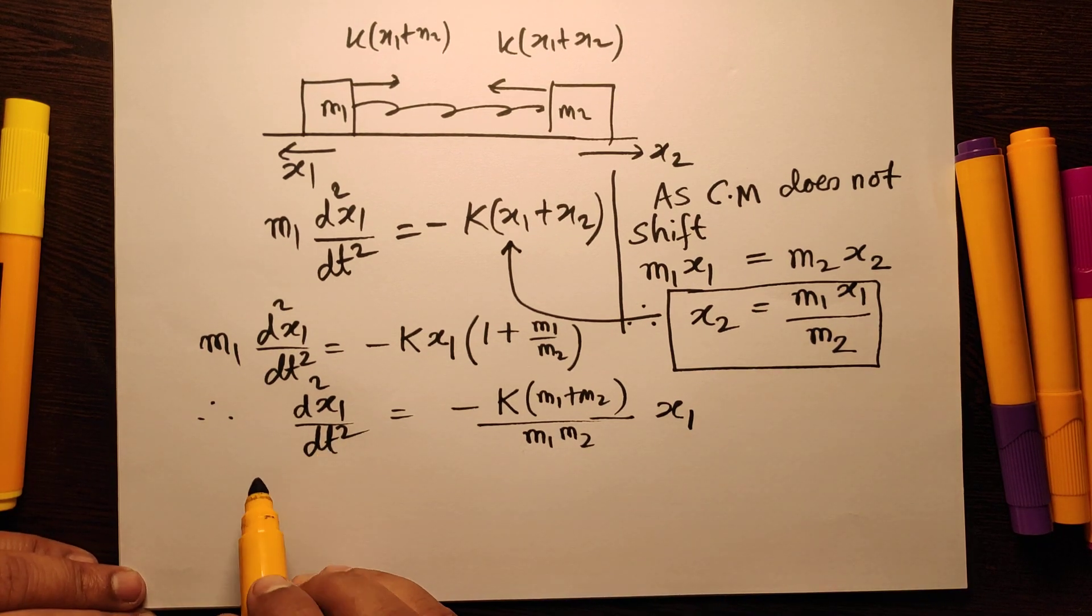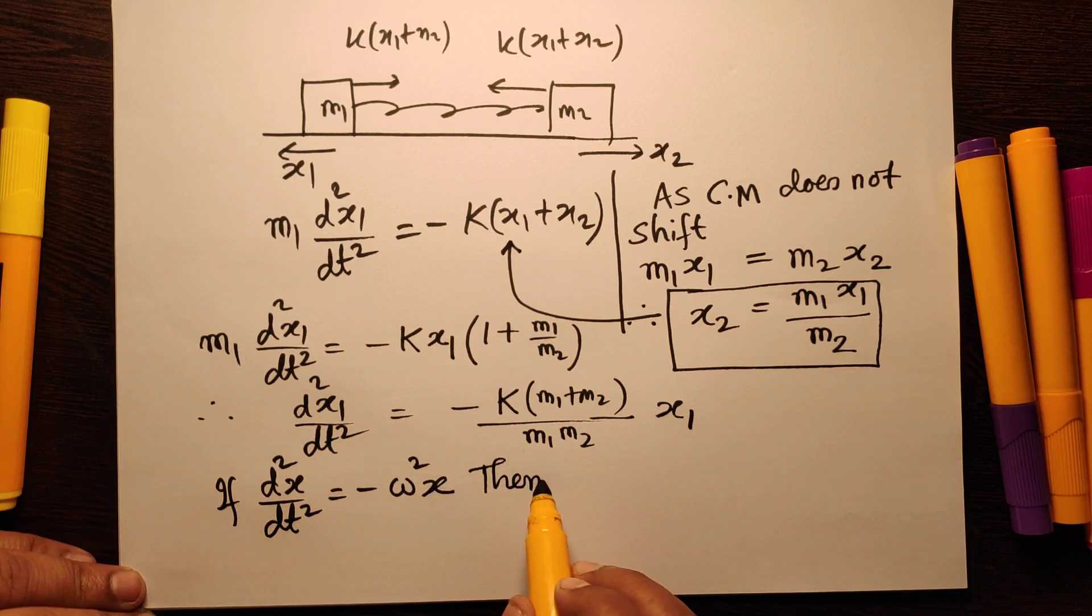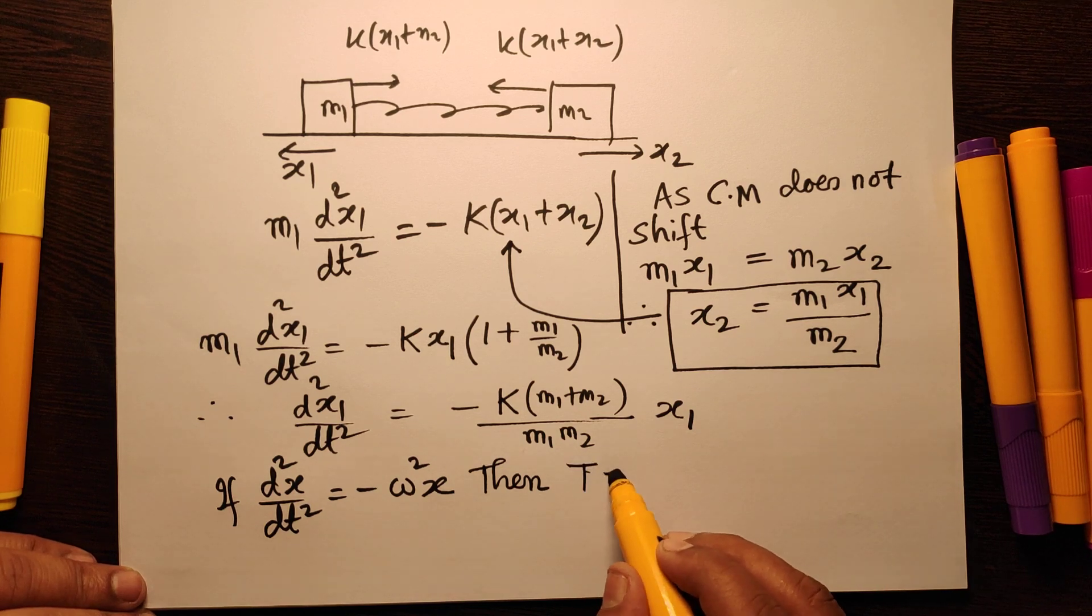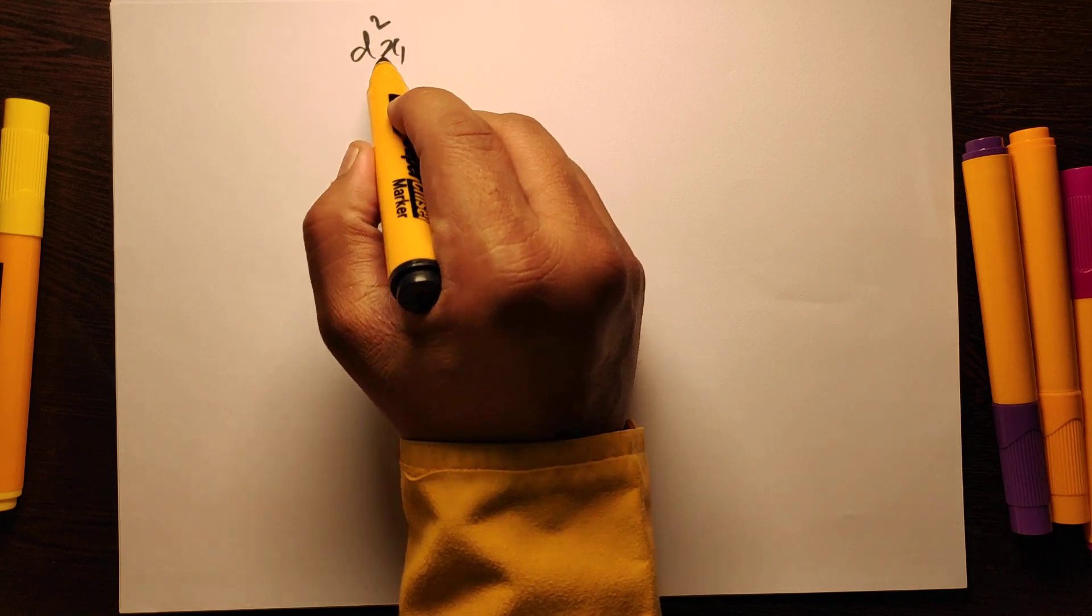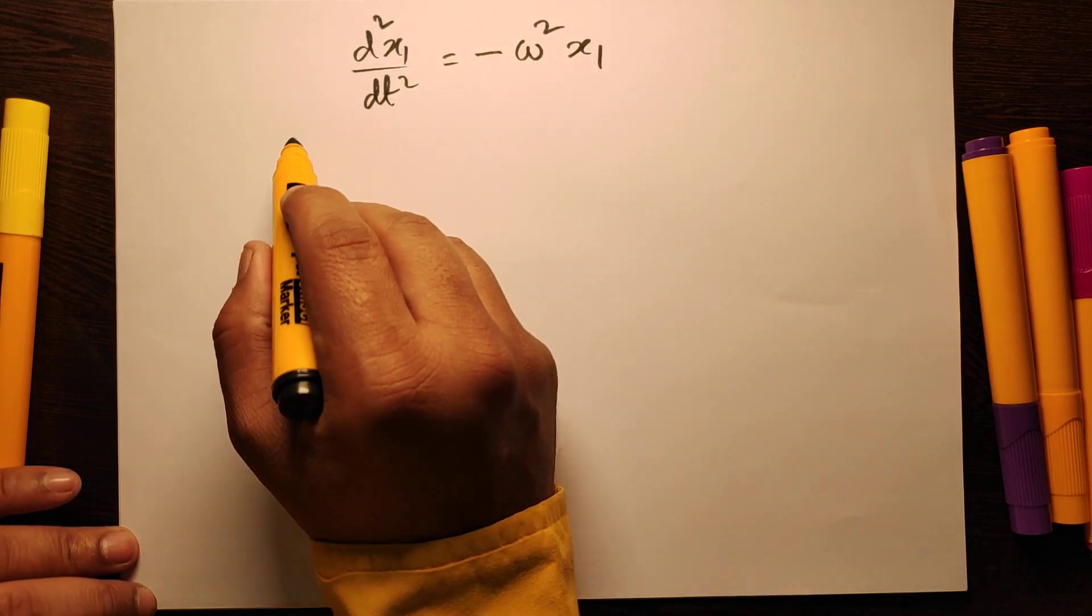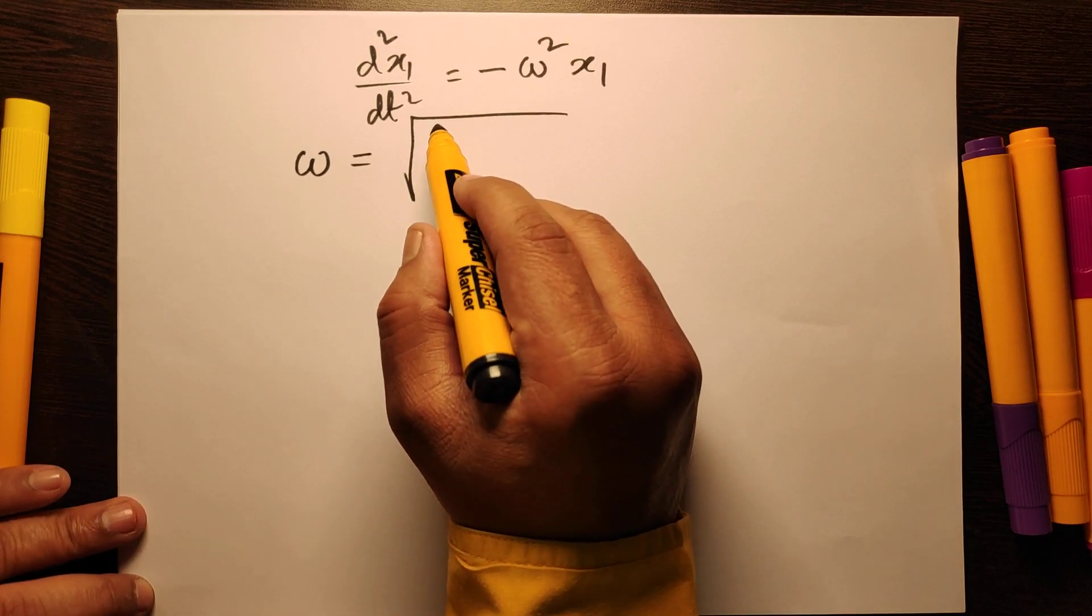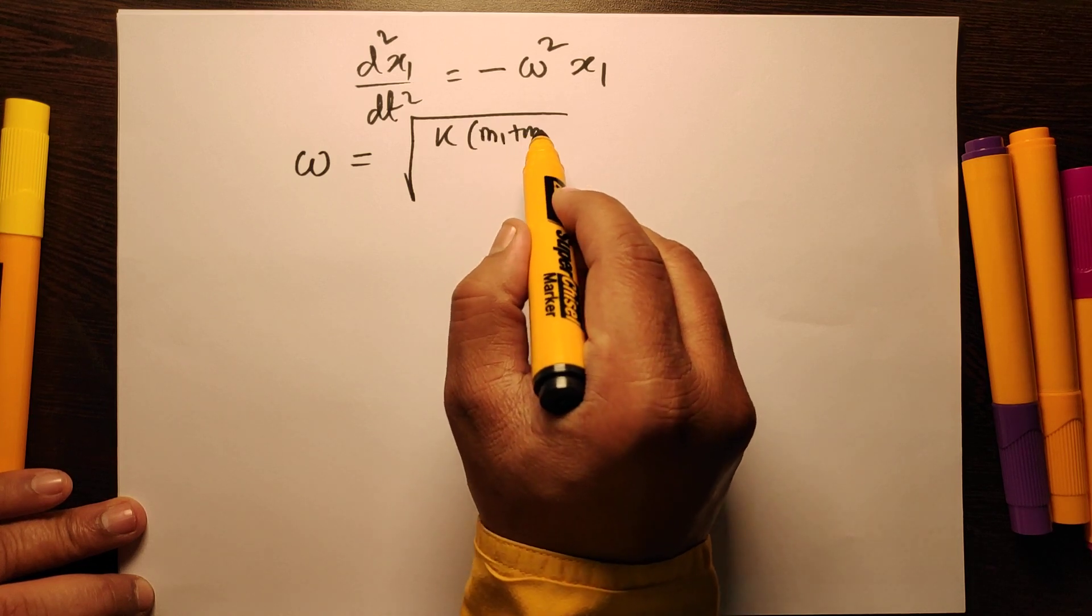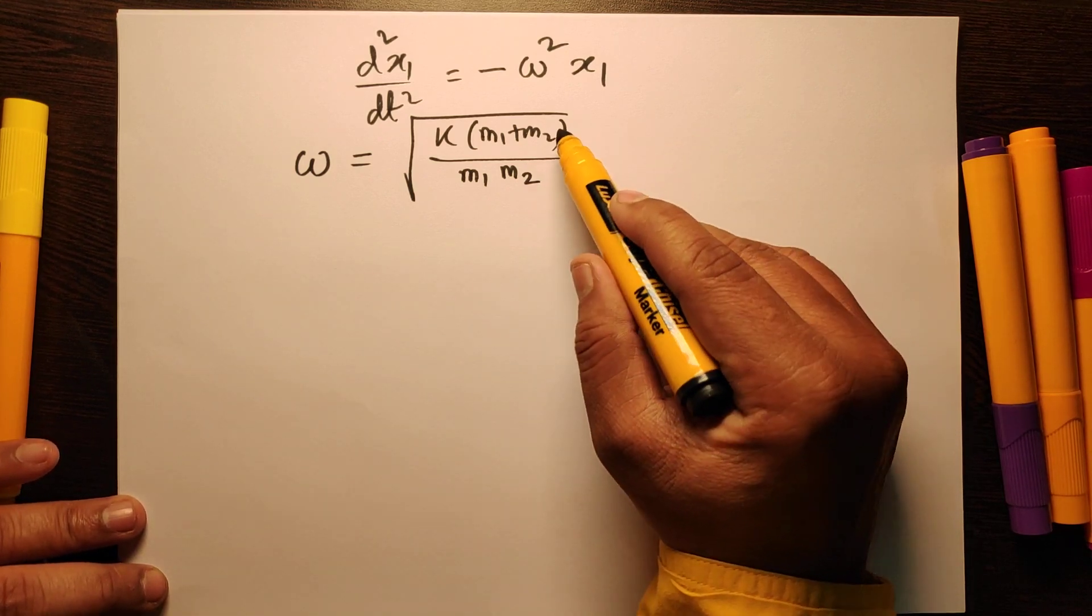We already know the solution of the differential equation: if d²x/dt² is minus ω²x, then the time period of the oscillatory motion is 2π/ω. Using the same logic, I get here d²x1/dt² equal to minus ω²x1. So ω is here root of k(m1 plus m2)/(m1·m2), and therefore this is the time period.